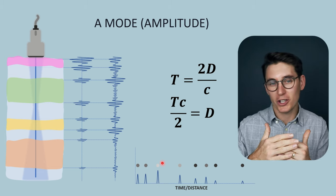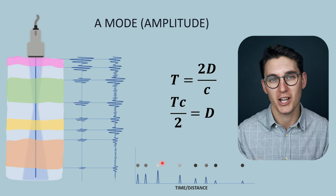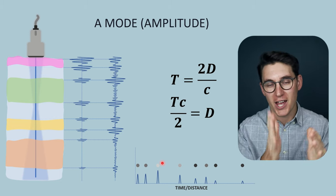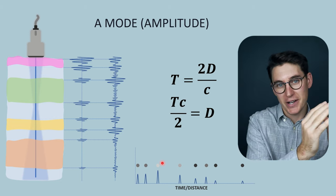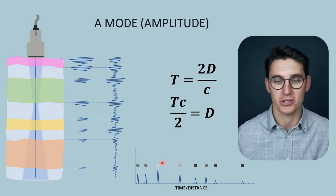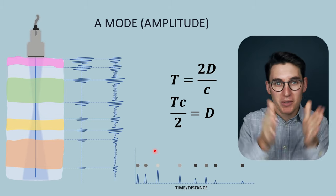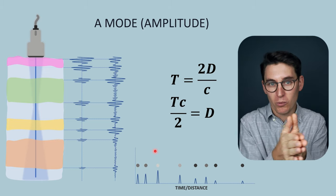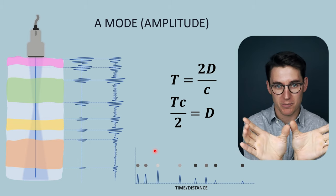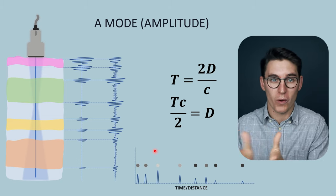For the most part we no longer use amplitude mode, but there are specific circumstances where it's used. The most common is in ophthalmology, where an ultrasound probe placed on the eyeball can show where the lens starts, where the vitreous humor is, and where the retina is — and if there's a mass, the retina may be displaced. In the past it was also used to detect midline shift in a neonate: if the falx cerebri was shifted to one side, the distance between skull, falx cerebri, and the other skull was no longer symmetric.